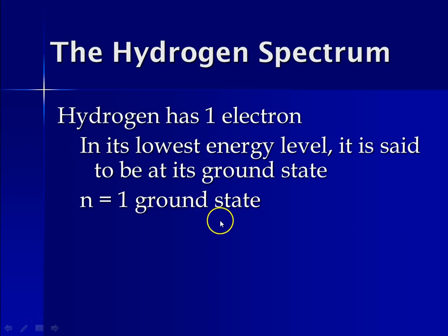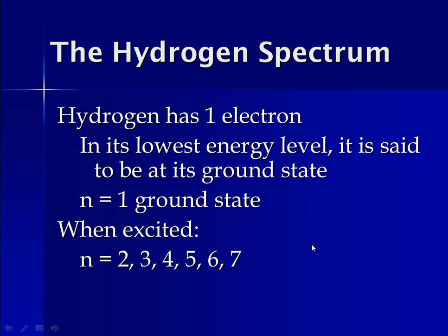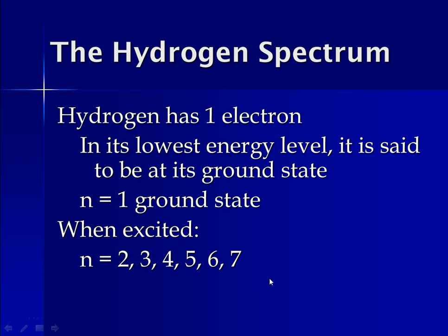Hydrogen has only one electron in its lowest energy level, which is called the ground state — that's n=1 for hydrogen. When the electron is excited and absorbs energy, it can move up to energy levels two, three, four, five, six, or seven — and you'll recall we learned there are seven possible energy levels.